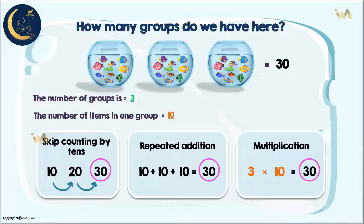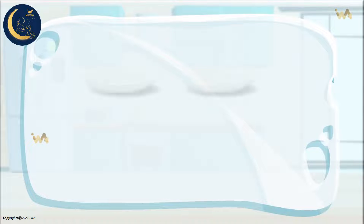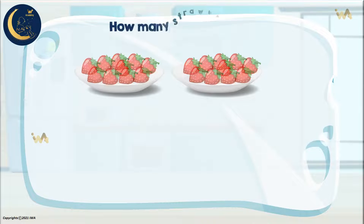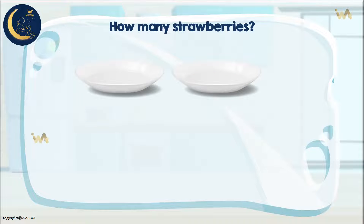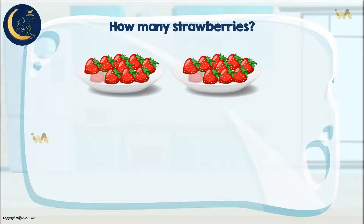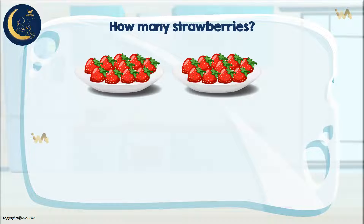Excellent, you are amazing! Look, we have two plates of strawberries. We want to know how many strawberries we have. Let's count the number of strawberries in this plate. One, two, three, four, five, six, seven, eight, nine, ten. We have ten strawberries in each plate. Let's use the repeated addition: ten plus ten equals twenty.